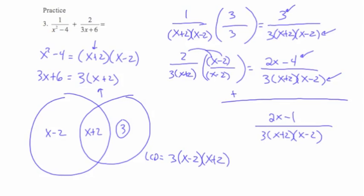Now I've got to make sure this answer can't be simplified — that's why we leave the denominator factored. Notice the numerator, 2x minus 1, can't be factored anymore. Since I have the denominator factored, I can compare the factors in the numerator with those in the denominator. Since 2x minus 1 doesn't match any factor in the denominator, nothing divides out. This is my final simplified answer: (2x minus 1) over 3 times (x plus 2) times (x minus 2).